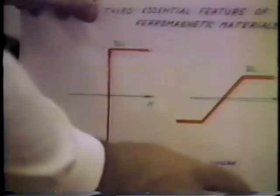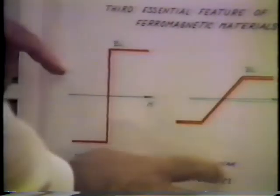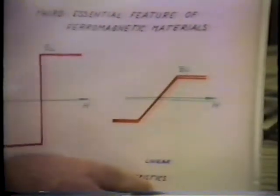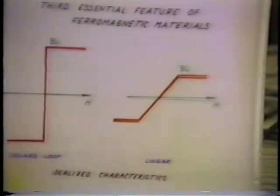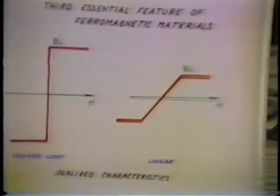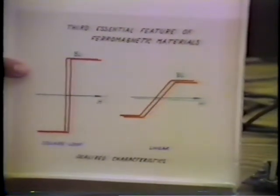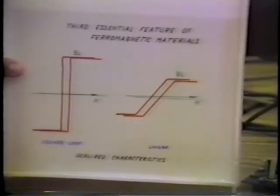The third basic feature of ferromagnetic material is that of the double-valued function of the BH loop. So far we have shown that the BH loop characteristic looked like this. However, in reality, the BH loop characteristic is indeed looking like this.